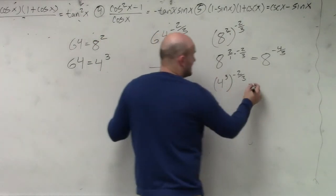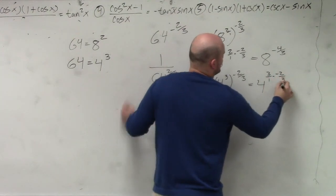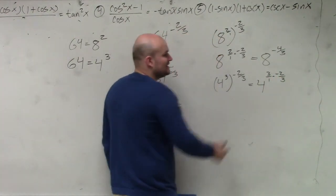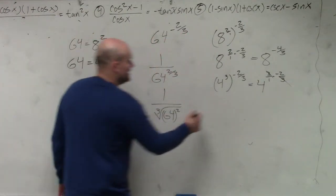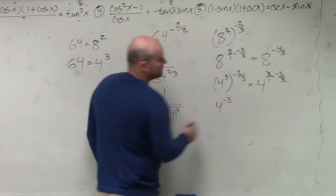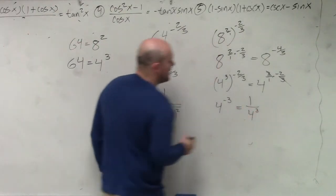When I do it this way, I get 4, 3 over 1 times negative 2 thirds. What happened with my 3s? Now my 3s divide to 1, leaving me with 4 to the negative third power, which is equivalent to 1 over 4 to the third power.